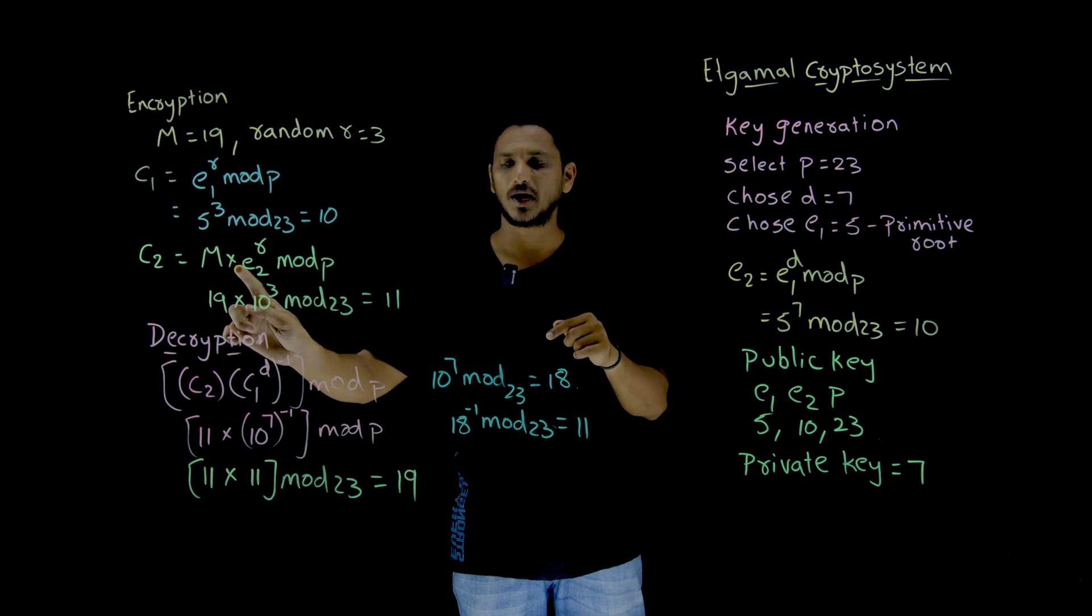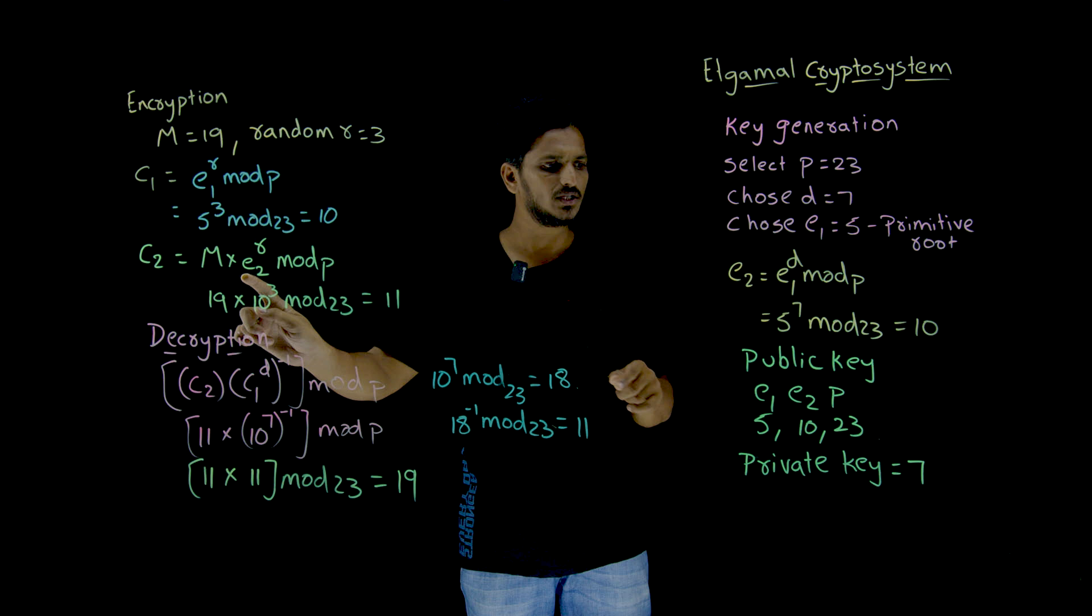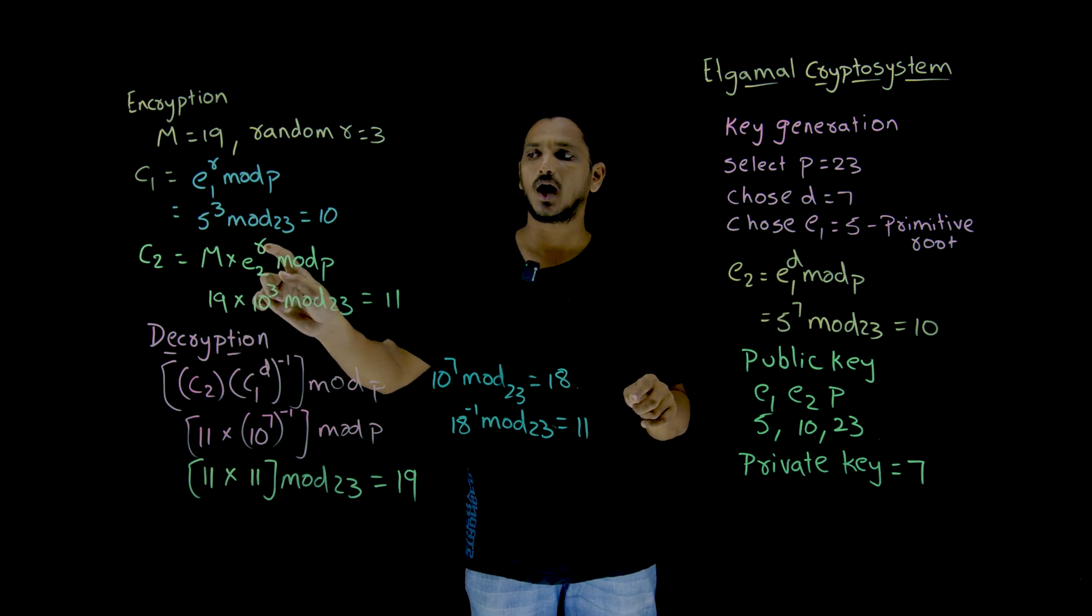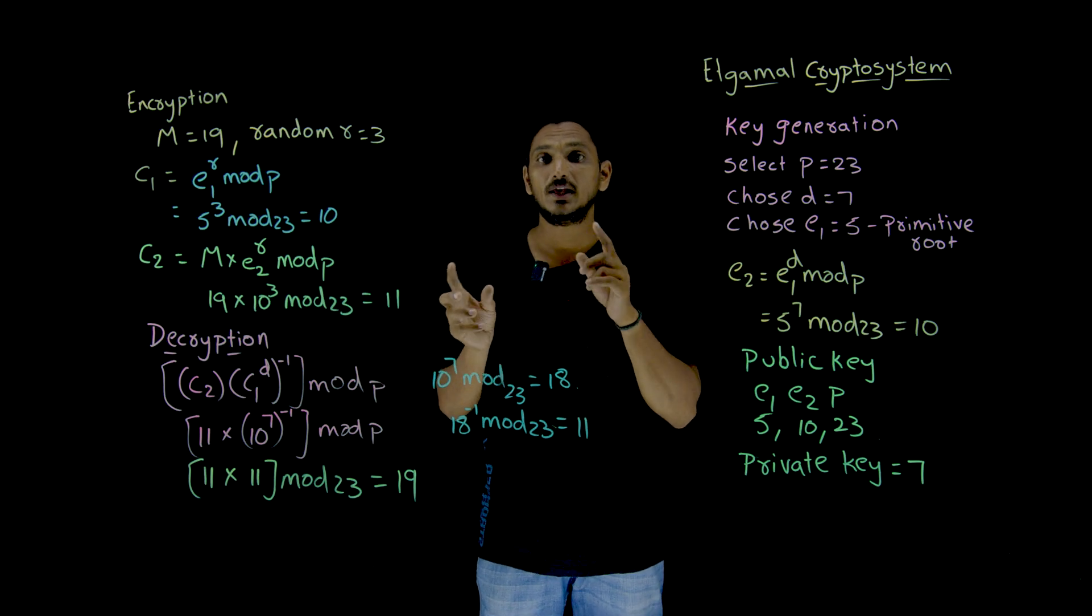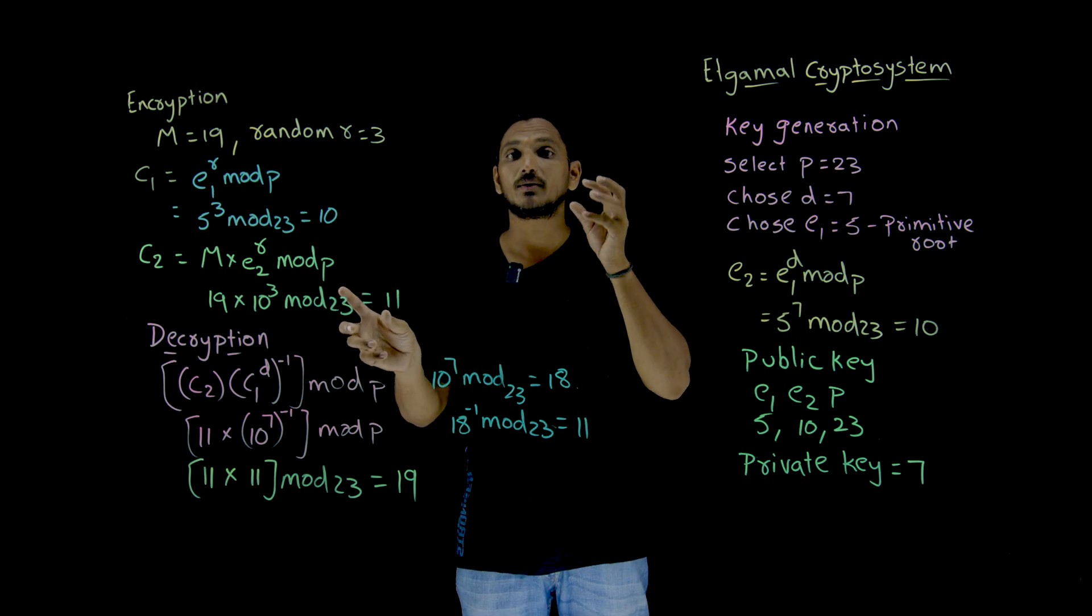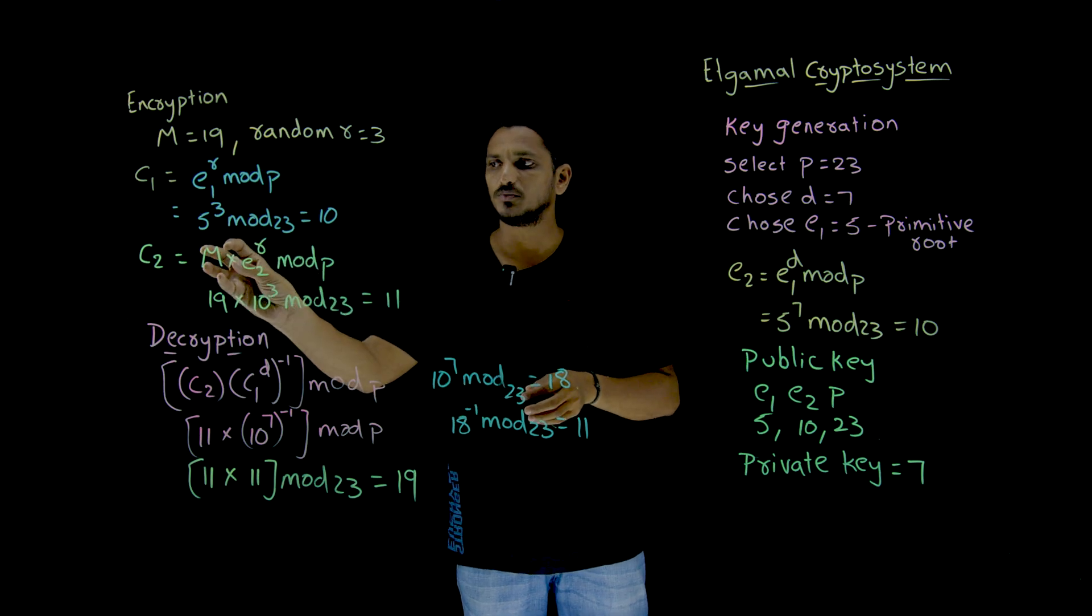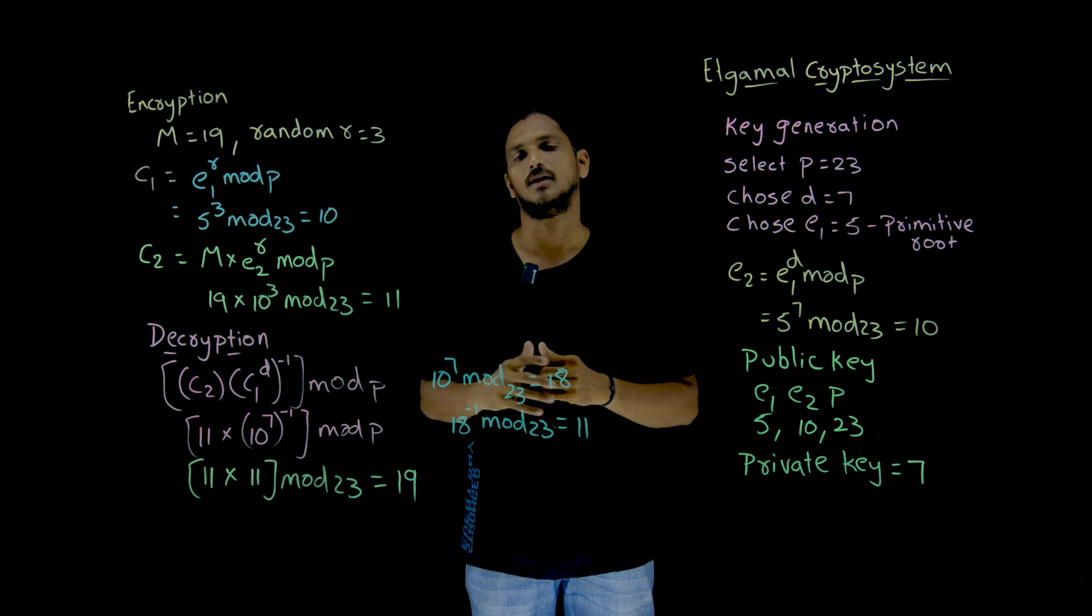E2 means E1 power D, means E1 power R D mod P. So that is why E1 power R D is our mask, actual mask. It is going to multiply with our actual message. The actual masking happens here.